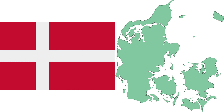Of these, the most populated island is Zealand, on which the capital Copenhagen is situated, followed by Funen, the North Jutlandic island, and Amager. Denmark's geography is characterized by flat, arable land, sandy coasts, low elevation, and a temperate climate.